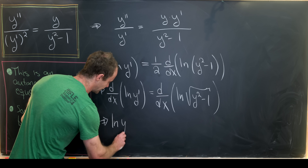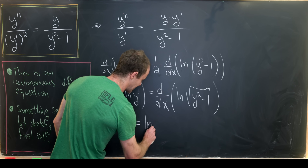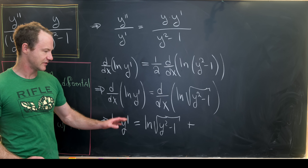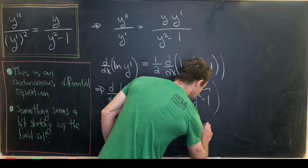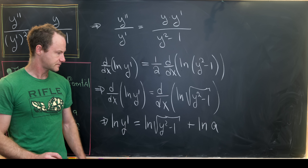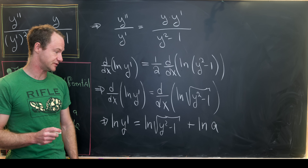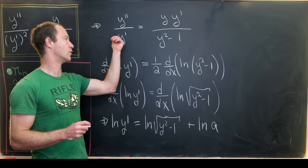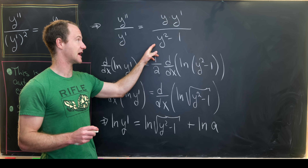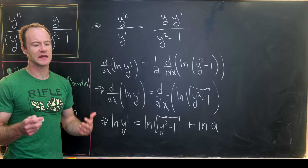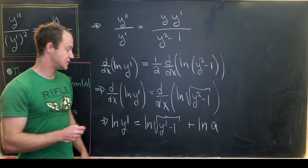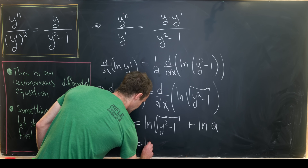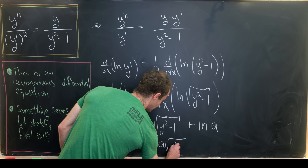So we can write this without the derivative: the natural log of y prime equals the natural log of the square root of y squared minus 1 plus some constant. Since everything is within a natural log, I'll write that constant as the natural log of some number a — and this is fine because the natural log is an onto function. There is something problematic about y prime equaling 0 or y equaling plus or minus 1, since those appear in denominators, but we'll play it fast and loose. Using logarithm rules, we combine the sum of two logarithms into the log of a product: the log of a times the square root of y squared minus 1.